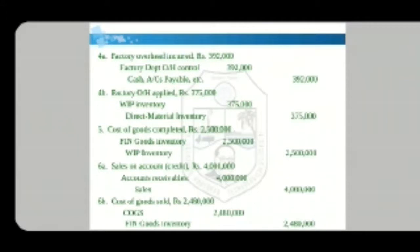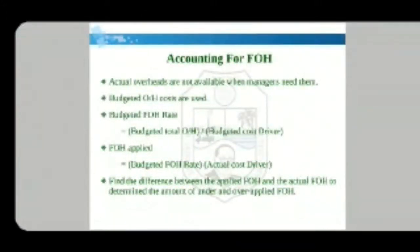Cost of goods completed 2,500,000 — debit Final Goods Inventory, credit Work-in-Progress Inventory. Sales on account — debit Accounts Receivable, credit Sales. Cost of goods sold 2,480,000 — debit Cost of Goods Sold, credit Final Goods Inventory.